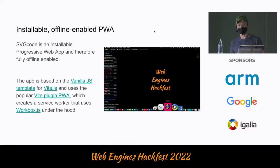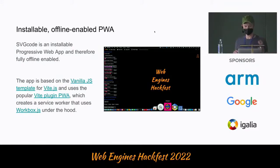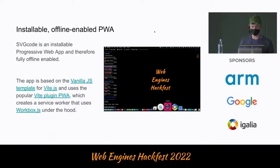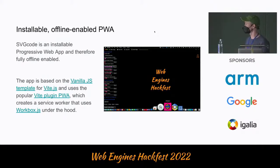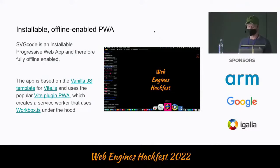SVGcode is an installable offline-enabled PWA. It uses internally a plugin called Vite plugin PWA, it's built on top of Vite and uses the vanilla JS template. This Vite plugin PWA internally works with Workbox — the Workbox library to make all of this offline enabled. And you can install the application to your dock on Mac.